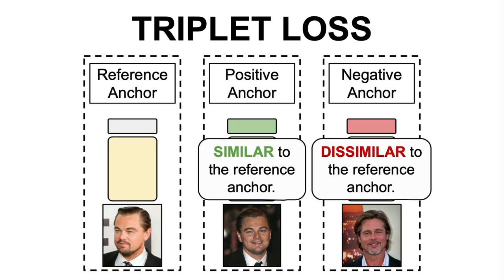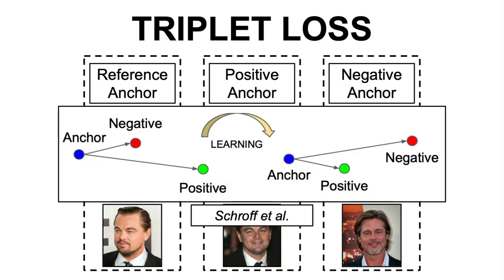In comparison to Siamese networks, which only deal with pairs of samples, the triplet loss architecture introduces an additional layer of complexity by incorporating the negative anchor, allowing the model to not only bring similar instances closer together in the embedding space, but also push dissimilar instances further apart.